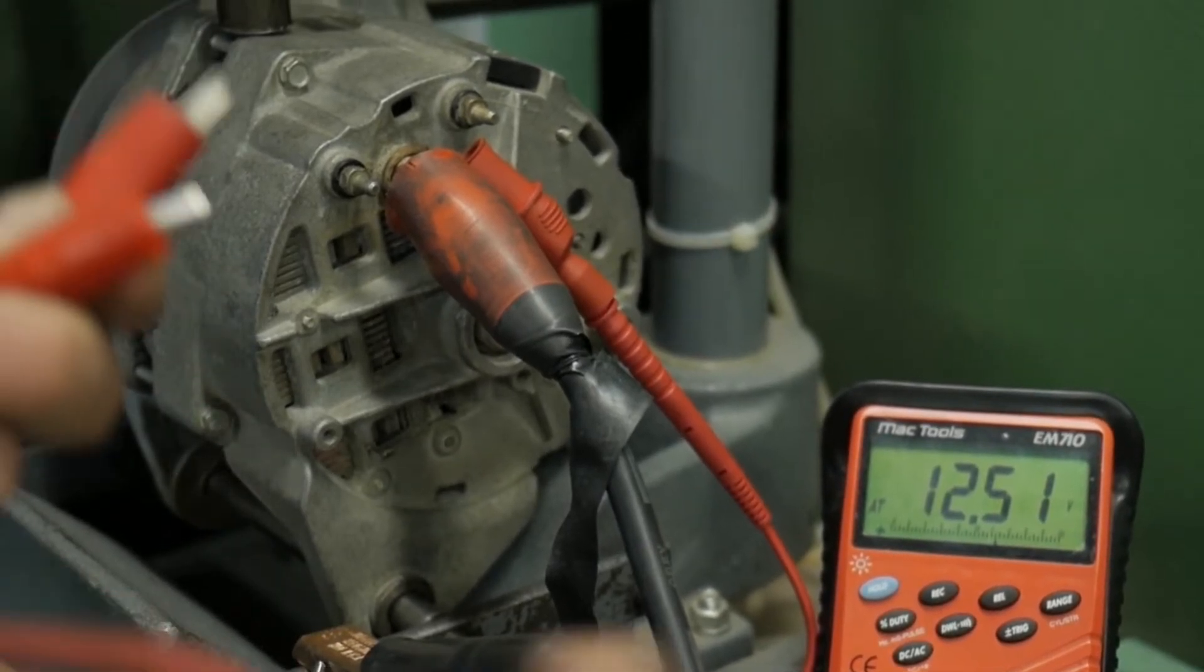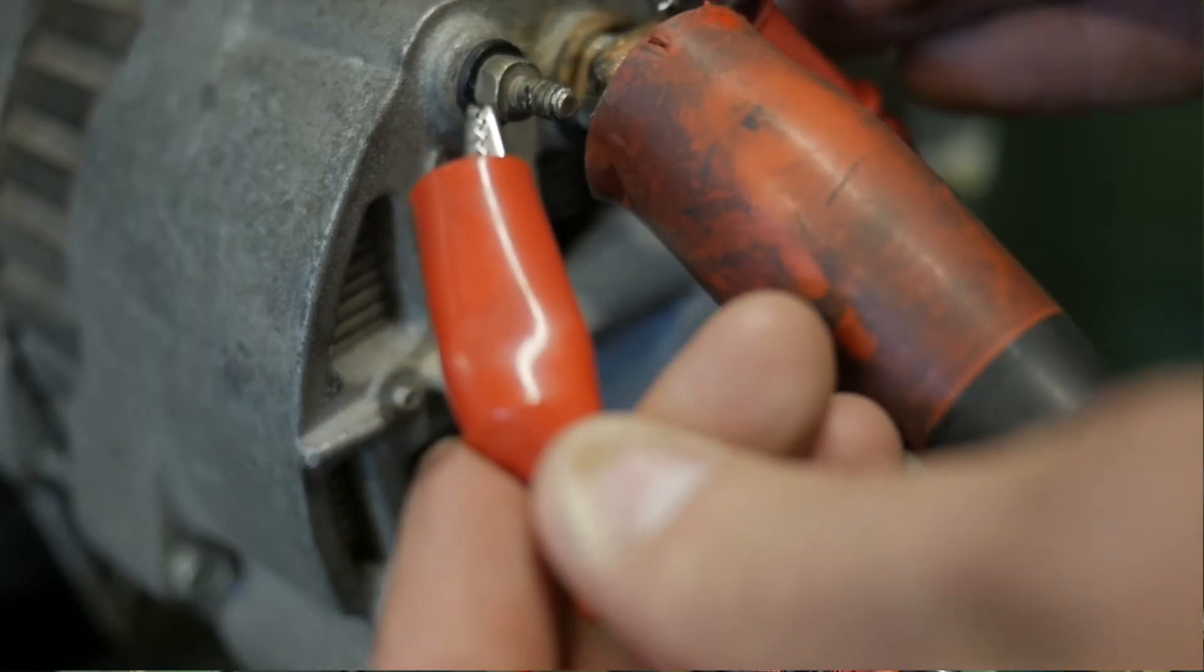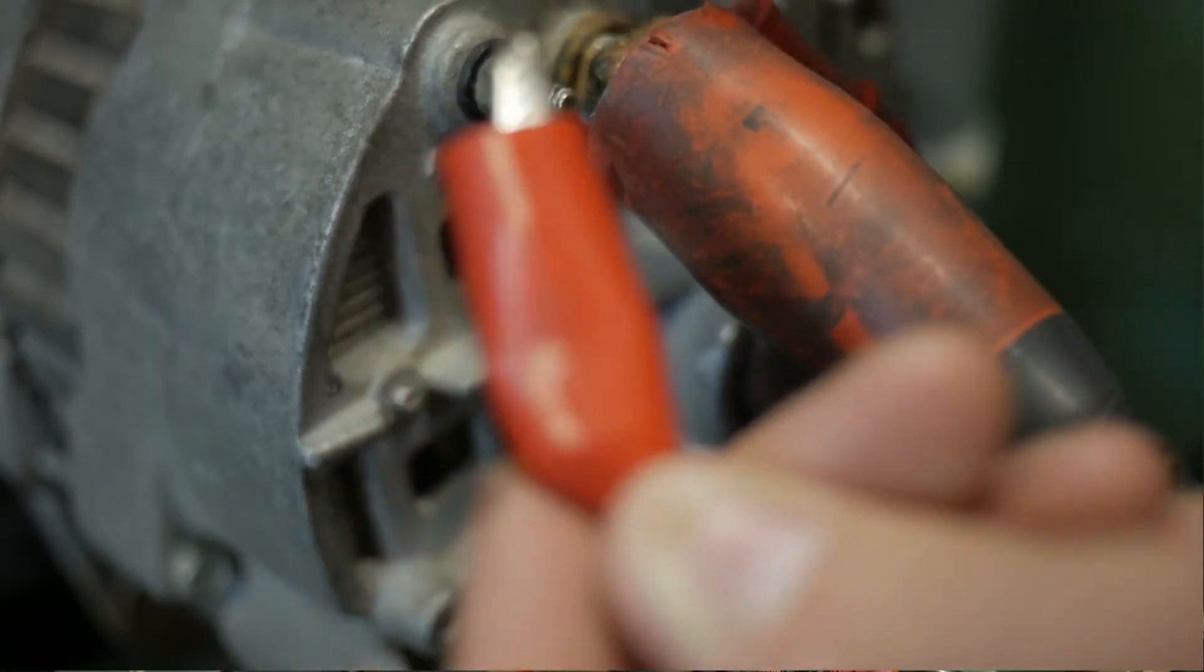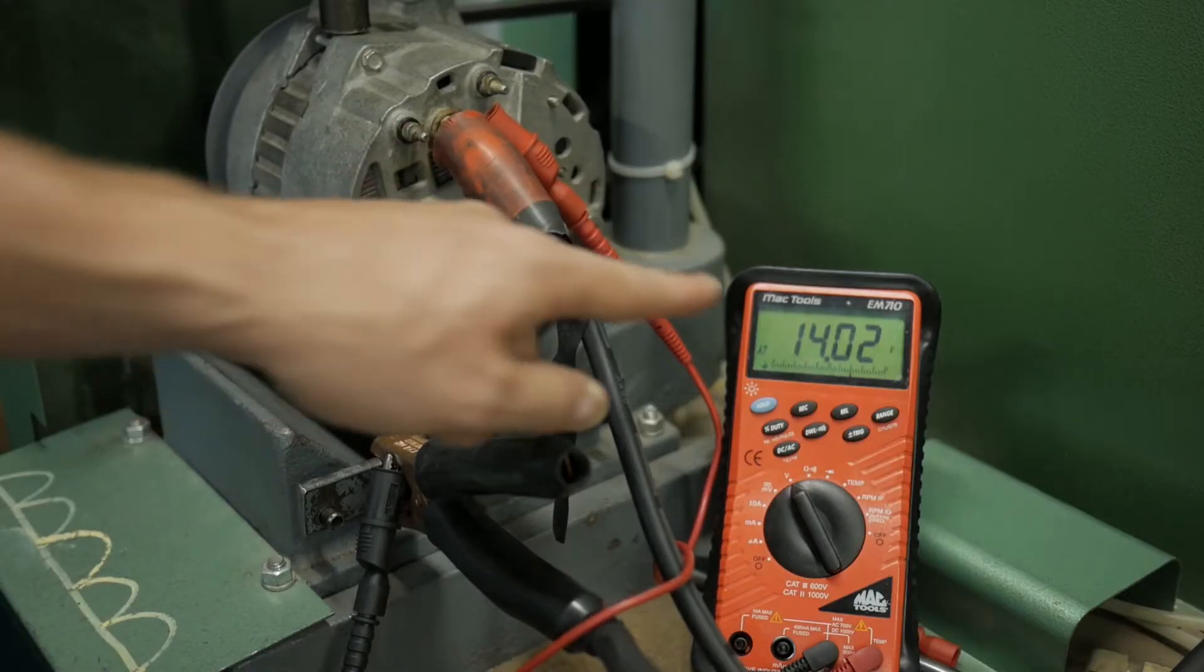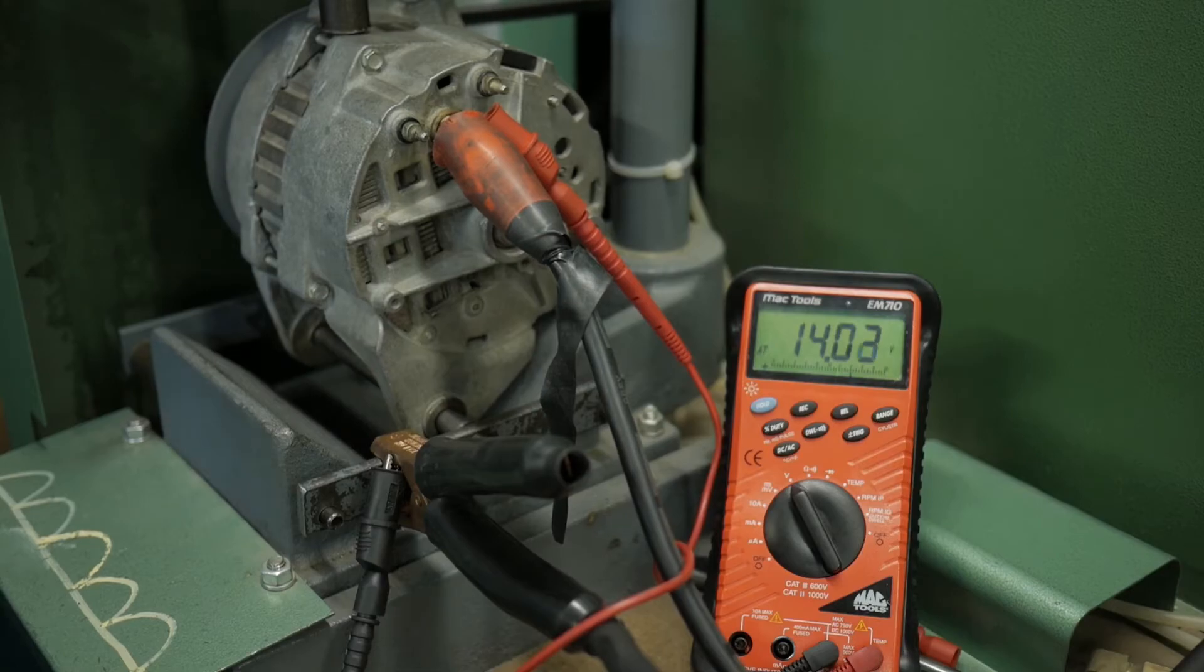I'm going to use a jumper from the battery positive terminal and spark onto the R terminal momentarily. As soon as I did that, we could see that the residual magnetism—or electromagnet—was created in the rotor, and that caused the alternator to produce an output.